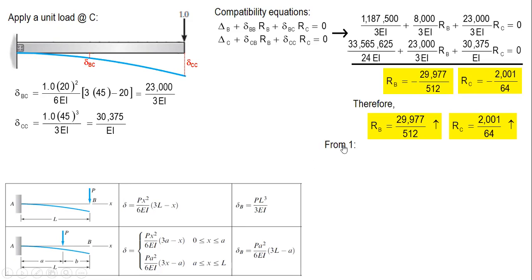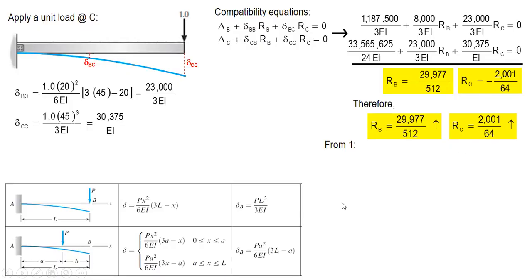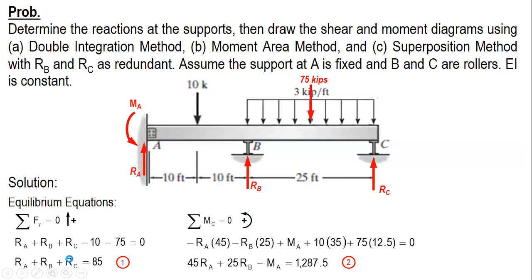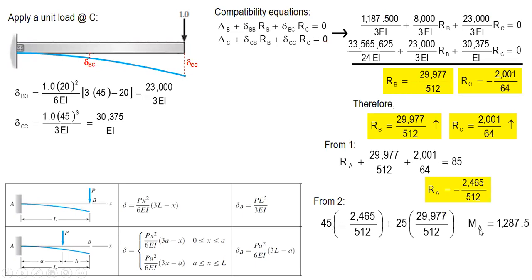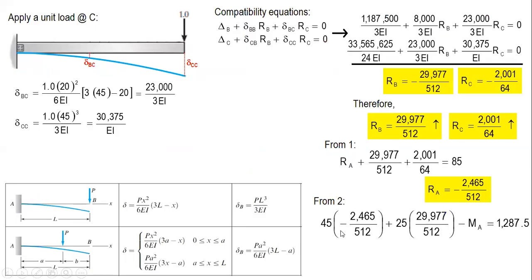Going back to equation one: RA plus RB plus RC equals 85. With RB and RC known, we solve for RA. RA comes out negative, meaning it acts downward. From equation two: negative 45RA plus 25RB minus MA equals 1287.5. Solving for MA gives a negative value, meaning MA acts clockwise.